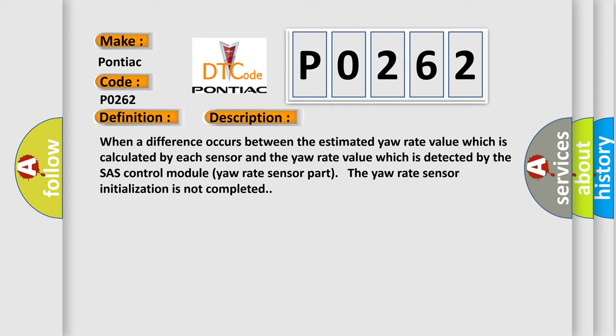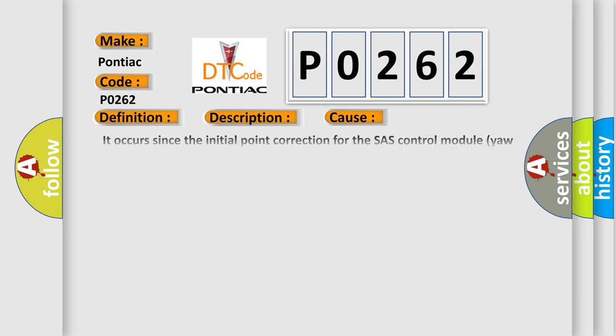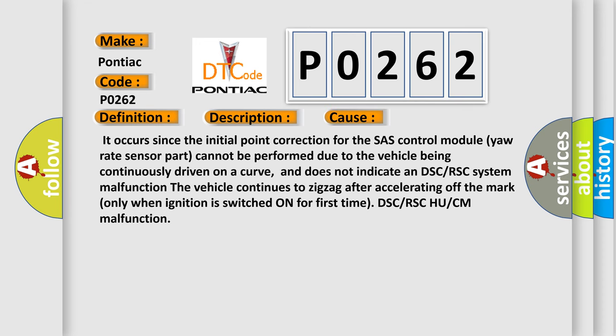This diagnostic error occurs most often in these cases: It occurs since the initial point correction for the SAS Control Module yaw rate sensor part cannot be performed due to the vehicle being continuously driven on a curve, and does not indicate a DSC or RSC system malfunction. The vehicle continues to zigzag after accelerating off the mark only when ignition is switched on for first time. DSC or RSC HU or CM malfunction.